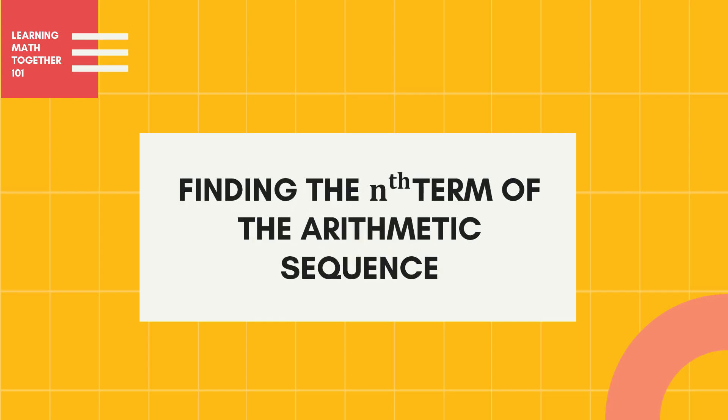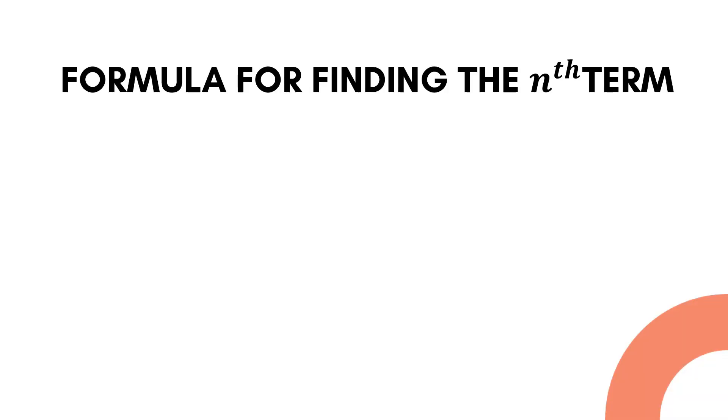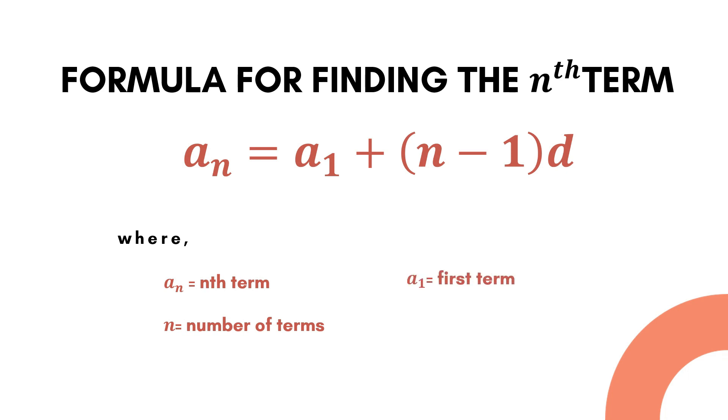Good day everyone! For today's video, we'll be finding the nth term of the arithmetic sequence using the formula. This is the formula for finding the nth term of the arithmetic sequence, where a sub n represents the nth term, n represents the number of terms, a sub 1 represents the first term, and d represents the common difference.